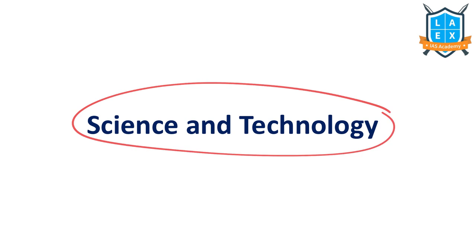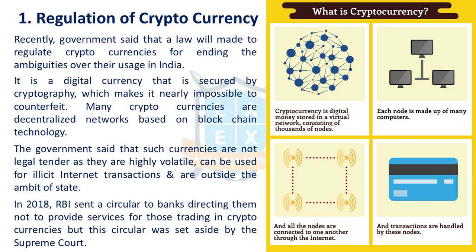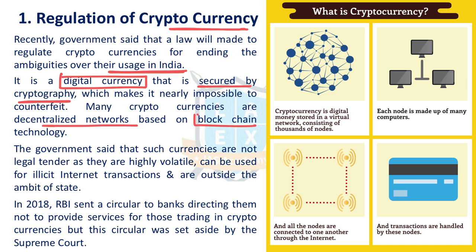Let us start with science and technology issues. The first one is regulation of cryptocurrency. Recently the government has said that it is going to regulate cryptocurrency, and it is trying to bring in a bill to regulate it. Cryptocurrency is a digital currency secured by cryptography. Cryptocurrencies are decentralized networks based on blockchain technology. Governments are concerned because these are not regulated by any government, not centralized, and not regulated by central banks. RBI in 2018 brought a circular asking all banks not to serve companies trading in cryptocurrencies, but this was set aside by the Supreme Court, which said they need a comprehensive policy for regulating cryptocurrency.